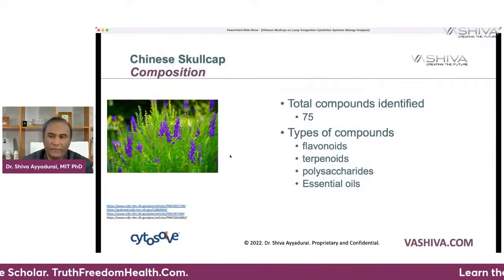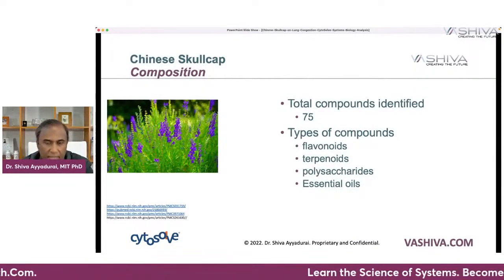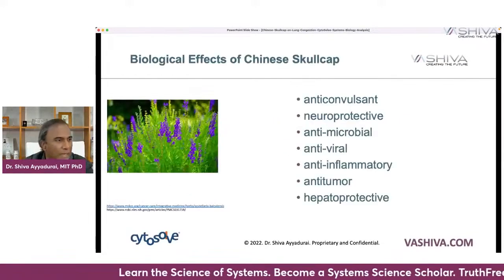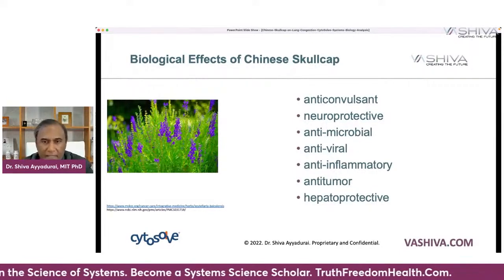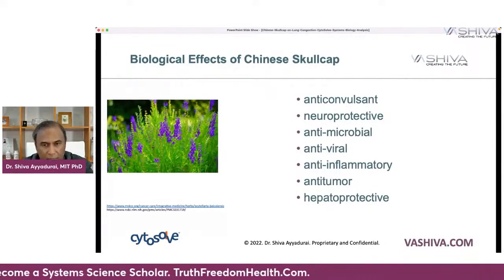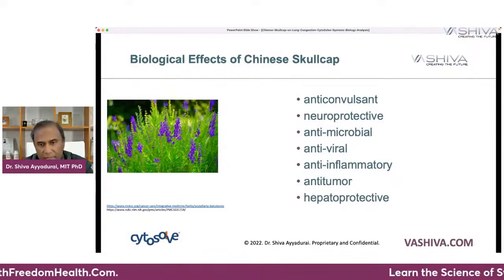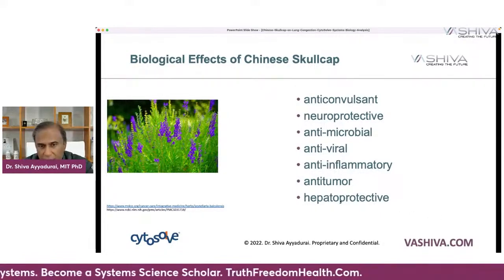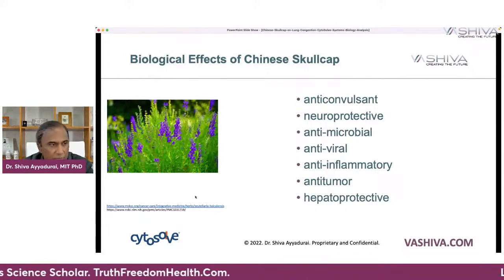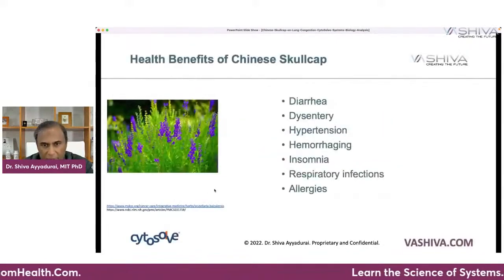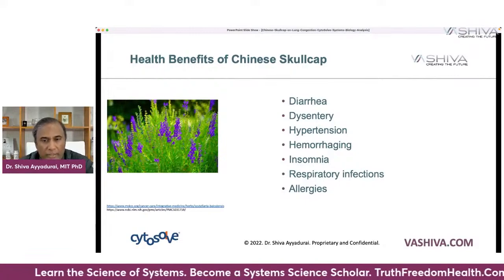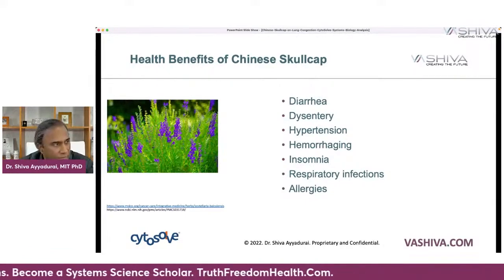There are a total of 75 different chemical compounds identified in Chinese Skullcap, falling into four types: flavonoids, terpenoids, polysaccharides, and essential oils. The biological effects of Chinese Skullcap include being an anticonvulsant — very important for stopping a cough or addressing congestive issues — as well as neuroprotective, antimicrobial, anti-inflammatory, anti-tumor, and hepatoprotective. Health benefits include helping fight diarrhea, dysentery, hypertension, hemorrhaging, insomnia, respiratory infections, and allergy.